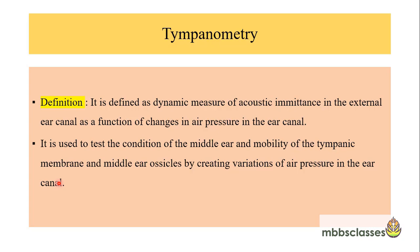Since it is an objective test, before tympanometry, pure tone audiometry used to be done for hearing evaluation. Pure tone audiometry tells us about the type of hearing loss — whether it is conductive or sensorineural hearing loss. But pure tone audiometry fails to tell us about the nature of the disease. So to know about the nature of the middle ear disease, tympanometry is useful to find out the pathology.